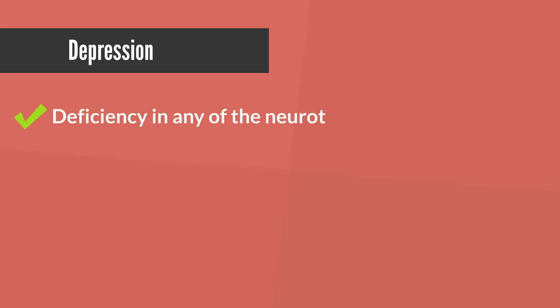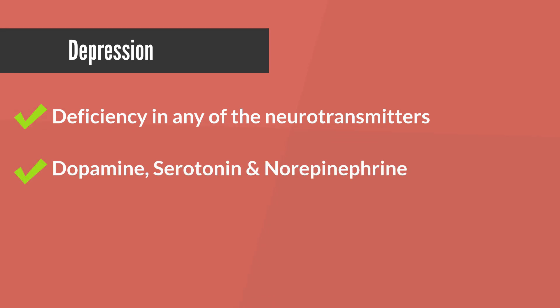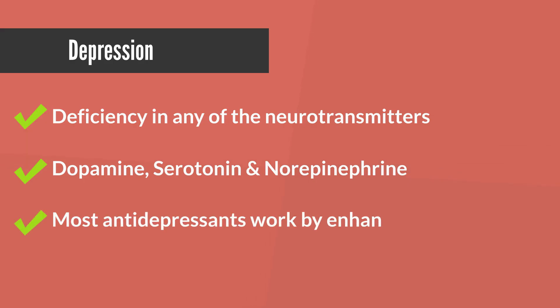Now, at a very high level, depression is caused when there is a deficiency of certain chemicals in the brain called neurotransmitters. Typical examples are dopamine, serotonin, and norepinephrine. Therefore, most antidepressants tackle the issue of depression by enhancing these neurotransmitters, typically by preventing their destruction or degradation.